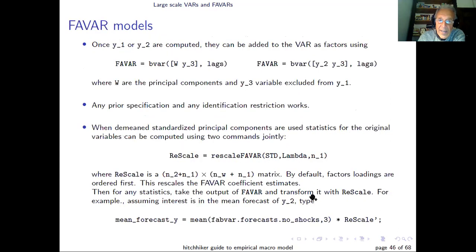Once you have done that, then you can call the BVAR command that we have used in the past, specifying that the data you're going to use is now either the principal components and an additional set of variables Y3, or the mean of the variables that are not interesting to you and the variables that you care about. And you specify also the number of lags.